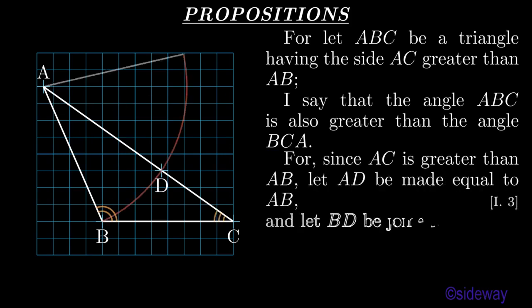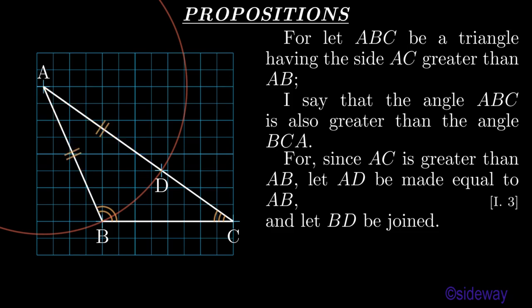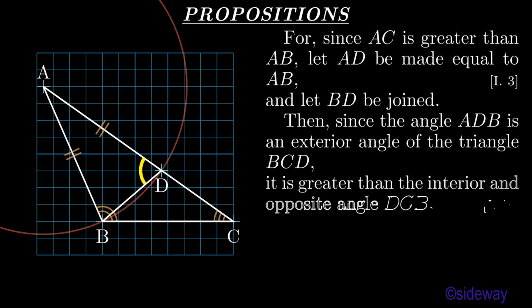For, since AC is greater than AB, let AD be made equal to AB, by Book 1 Proposition 3. And let BD be joined. Then, since the angle ADB is an exterior angle of the triangle BCD, it is greater than the interior and opposite angle DCB, by Book 1 Proposition 16.